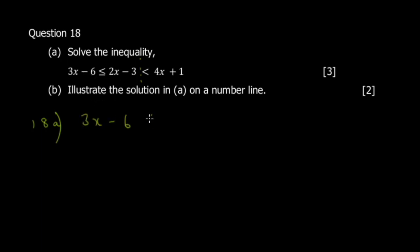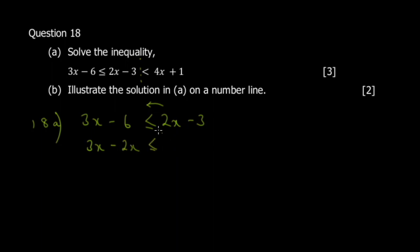First inequality: 3x - 6 ≤ 2x - 3. To avoid negatives, move 2x to the left and -6 to the right: 3x - 2x ≤ -3 + 6, so x ≤ 3.